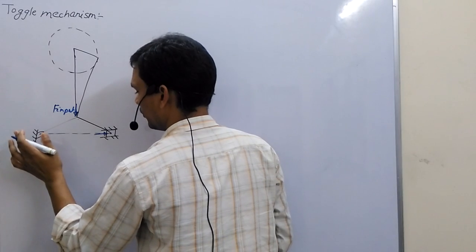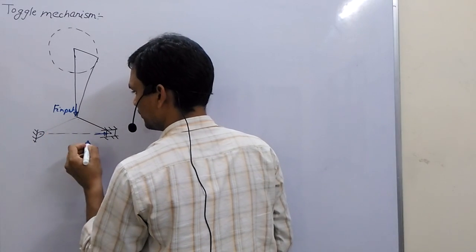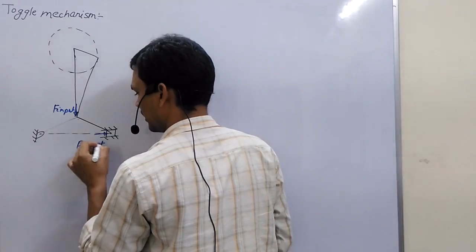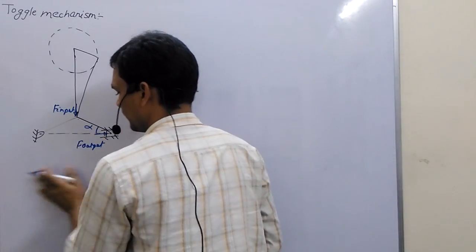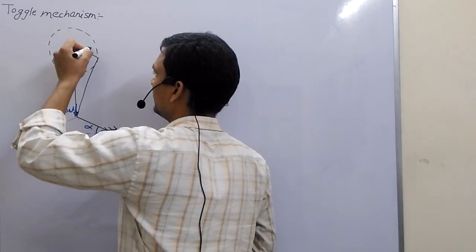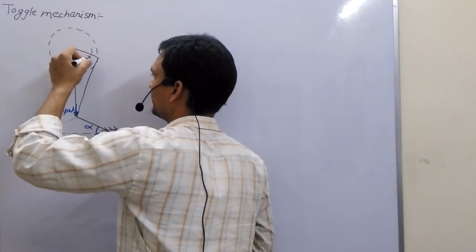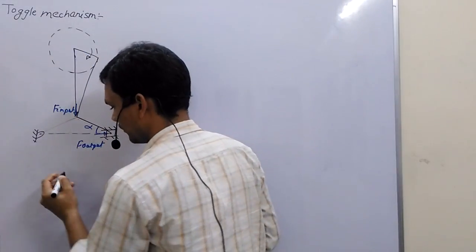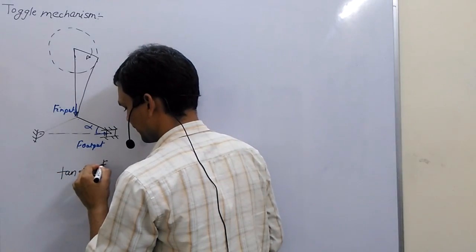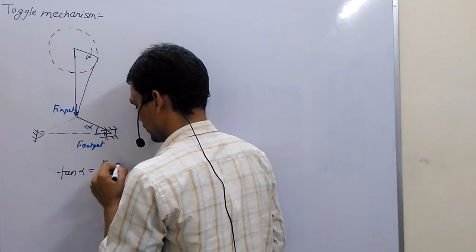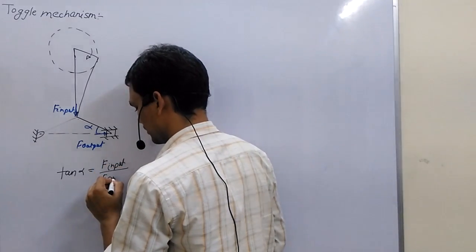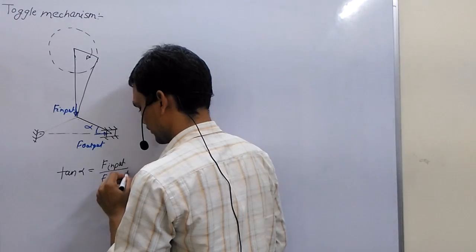This is the fixed crank, or fixed. Now, F output will come here. This is angle alpha. And if we want to calculate the value of alpha, then tan(alpha) is equal to F input upon F output.